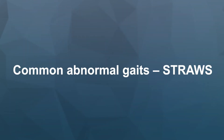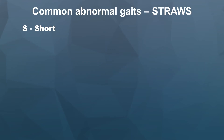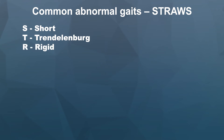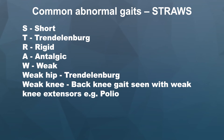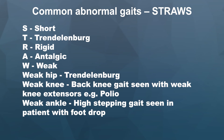Common gait abnormalities can be recalled by the mnemonic STRAWS. S for short leg — you step down on the short leg then bolt up on the long leg to compensate, and the patient's head bobs up and down. T for Trendelenburg — abnormal pelvic tilt resulting in the patient's head swaying from side to side. R for rigid — characterised by hip hiking and circumduction of the leg. A for antalgic — with painful shortened stance phase; imagine walking with a stone in your shoe. W for weak — location or joint involvement dictates the weak gait pattern, including weak hip as in Trendelenburg, back-locking of the knee due to quadriceps weakness in polio patients, or foot drop due to common peroneal nerve palsy resulting in a high stepping gait. S for supratentorial — including spastic, ataxic, or equinus gait.